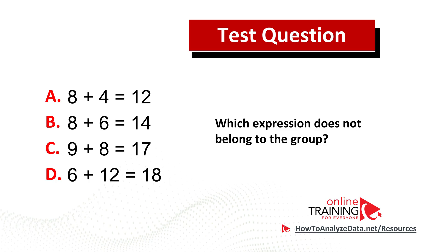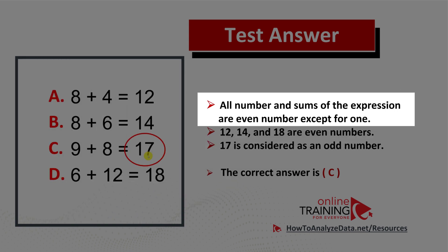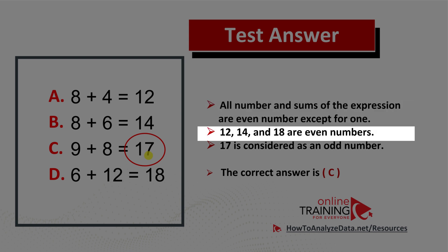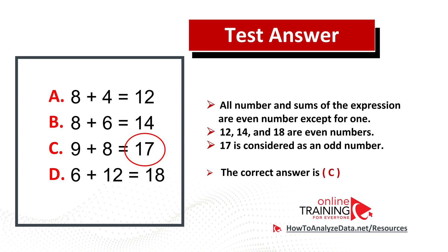Let's continue to see if we can solve this challenge together. What's interesting is that we're dealing with odd versus even numbers. Expression A has all even numbers: 8 and 4 equals 12. Expression B is the same: 8 plus 6 is 14, all even. Same with expression D: 6 plus 12 equals 18. But expression C has two odd numbers, 9 and 17. Looking at the answers, 12, 14, and 18 are all even numbers, and 17 stands out as odd. So the correct answer is choice C. Let's recap: all numbers and sums are even except one — 17 is the odd number, so the correct answer is choice C.